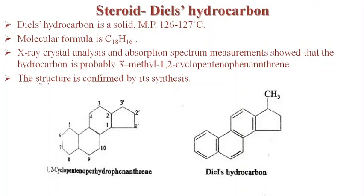Next we come to Diels hydrocarbon, a very important compound. It is a solid with a melting point of 126 to 127°C. The molecular formula is C₁₈H₁₆. X-ray crystal analysis and absorption spectrum measurements show that the hydrocarbon is probably 3'-methyl-1,2-cyclopentenophenanthrene. This is the structure of Diels hydrocarbon. The numbering of the phenanthrene nucleus is 1 through 10, with hydrogens at certain positions and a cyclopentene ring fused at positions 1,2.